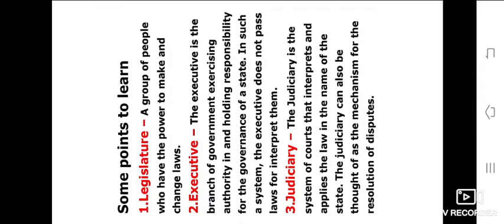The executive is the branch of government exercising authority in and holding responsibility for the governance of a state. In such a system, the executive does not pass laws, but interprets and acts in the name of the state. The judiciary can also be thought of as the mechanism for the resolution of disputes.